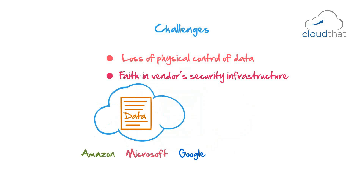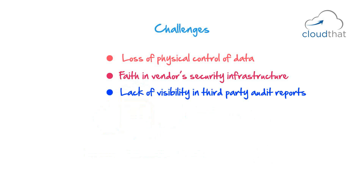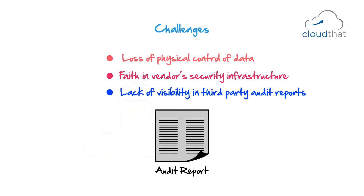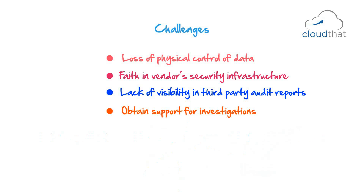You also have to have faith in vendor security infrastructure. With large providers like Amazon, Microsoft, or Google, you may have reasonable confidence, but with smaller cloud providers you should verify they are following proper security guidelines and compliance standards. Another challenge is lack of visibility in third-party audit reports — companies tell you they passed an audit but will not reveal the areas they were told to fix or improve.